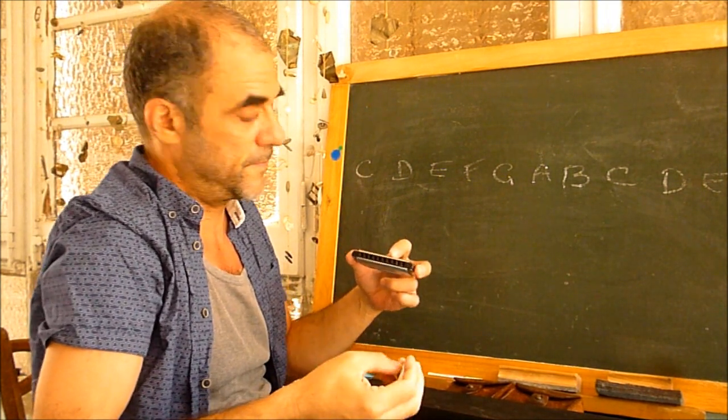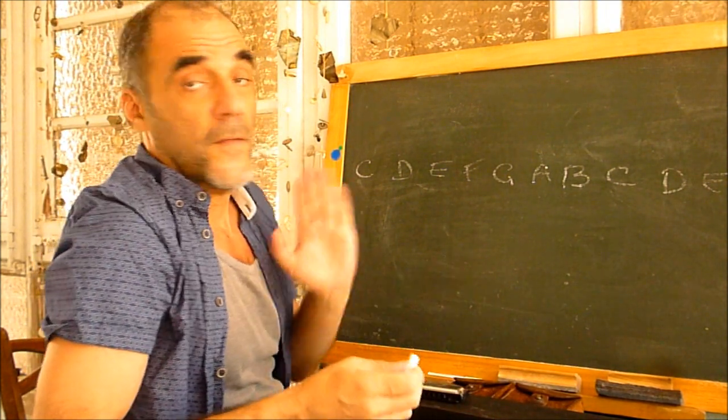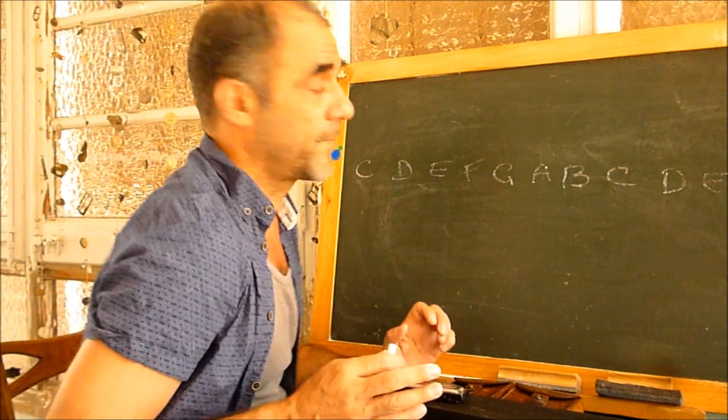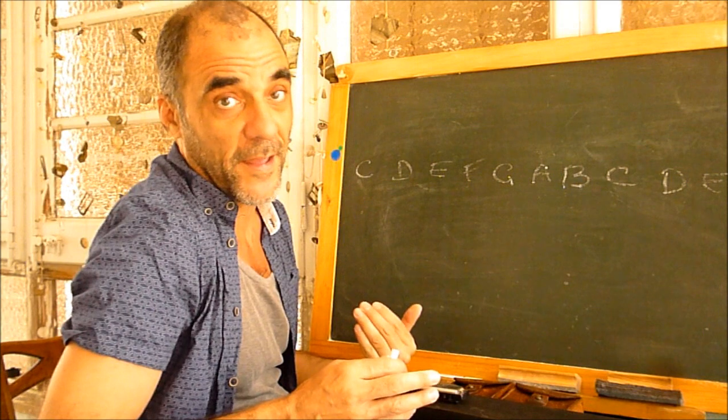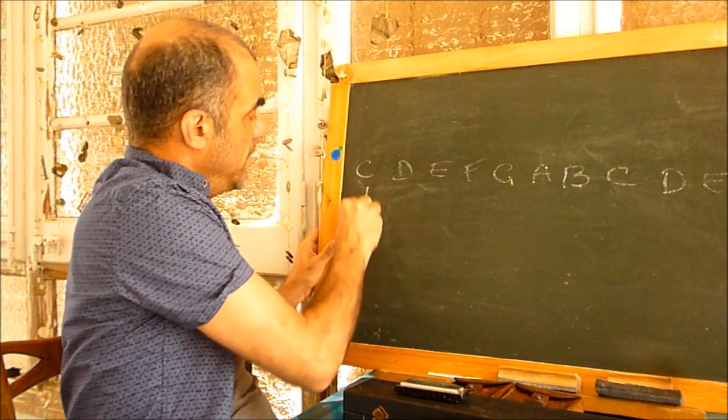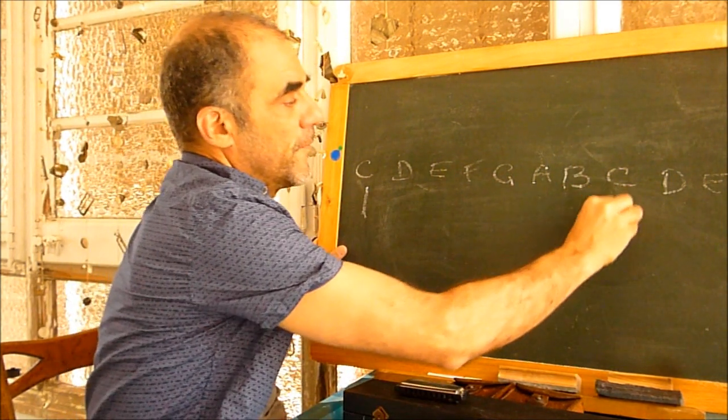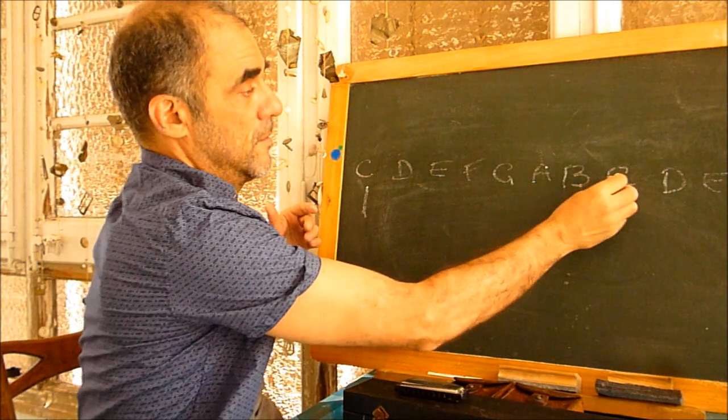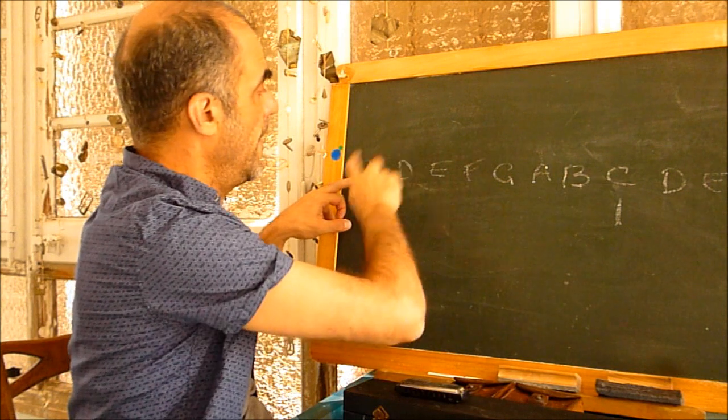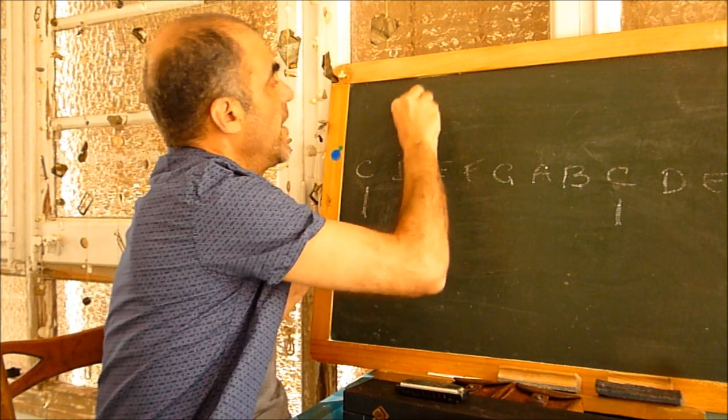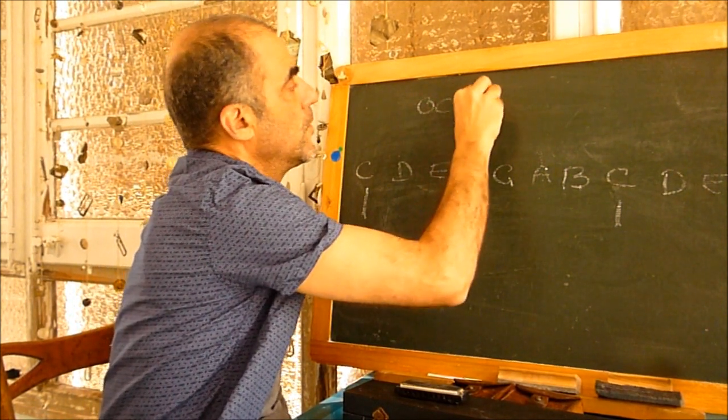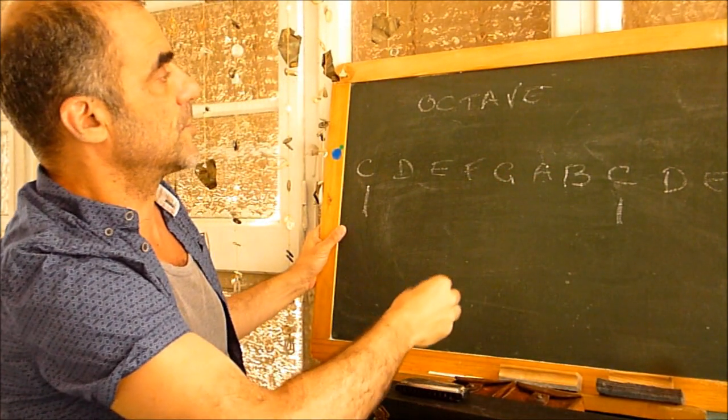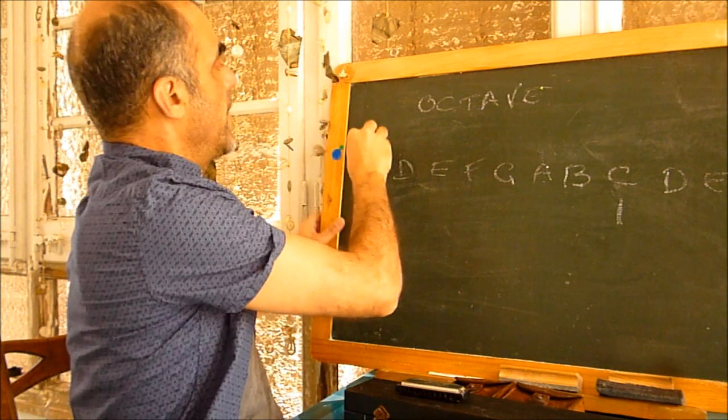So, there are many notes. Now, we were talking about the theory, and let's come back to this. From one C to the other, we have seen that frequency is the double. Frequency of this one is the double from this one. This is one octave. I don't know how you write this in English. I write it in French. I think maybe it's the same. One octave.